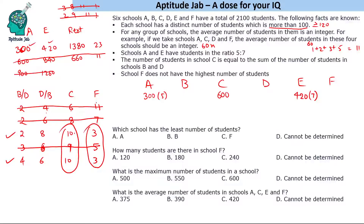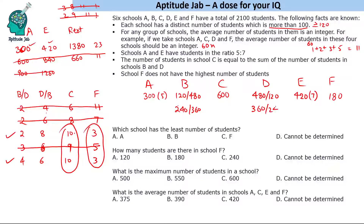So F = 180 students, and B and D are interchangeably 120 and 480, or 240 and 360. We cannot determine the individual values for B and D, but we can definitively determine A, C, E, and F.